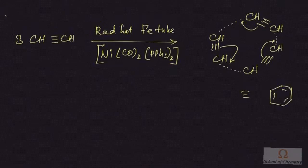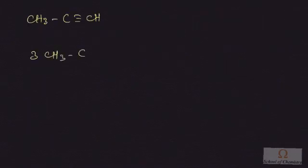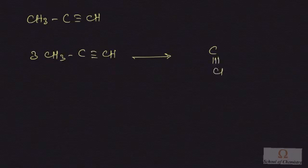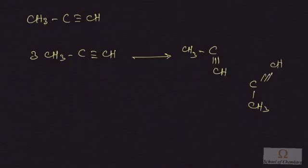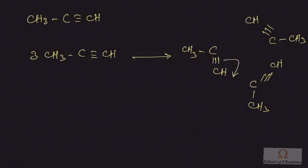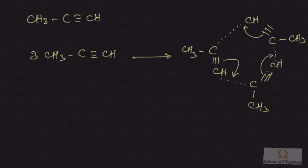Three moles of propyne trimerize to give you this compound: CH3-C≡CH. Likewise, the structure forms. Now what happens? One of the pi bonds shifts here and will form a new sigma bond between this carbon and this carbon. Likewise, this bond shifts here, forms a new bond, and this pi bond shifts here, forms a new pi bond. So which is equivalent to mesitylene.